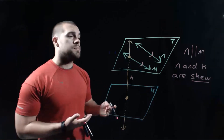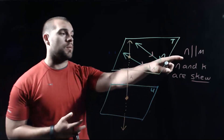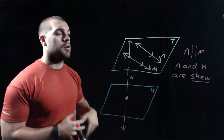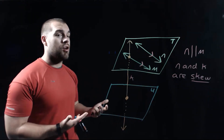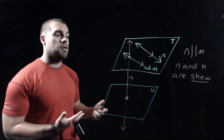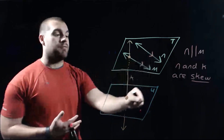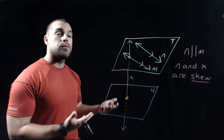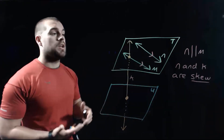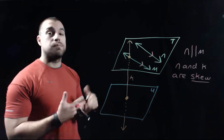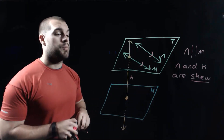Along with lines being parallel, like we talked about earlier, planes can also be parallel. So we have plane T and we have plane U — those aren't crossing each other, so these planes are also parallel.